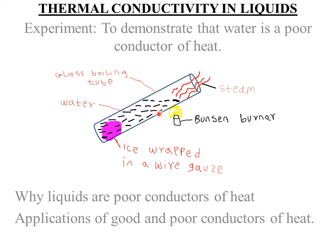Those are three important aspects students should know. The purpose of the wire gauze is to confine the ice at the bottom. We use a glass tube because it is a poor conductor of heat so it does not conduct heat from the top to the bottom. We heat the water at the top to prevent heat transfer to the wire gauze by convectional currents.